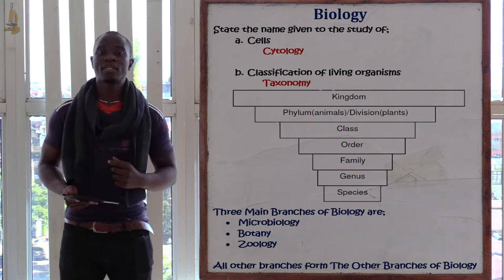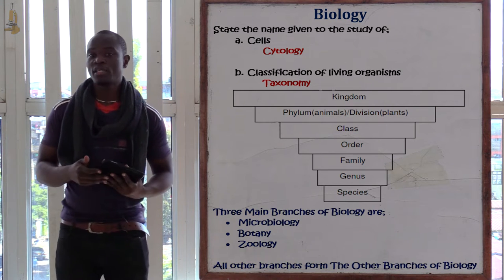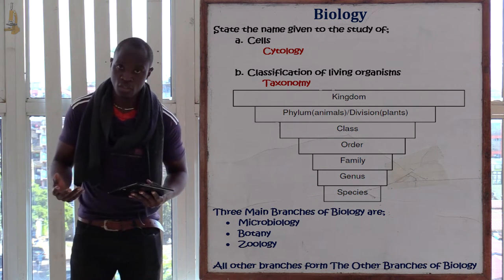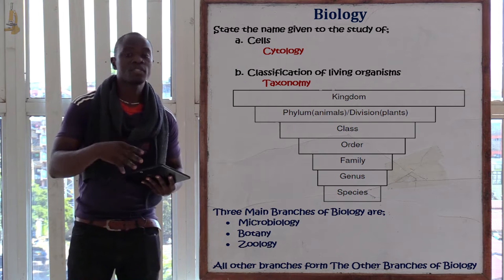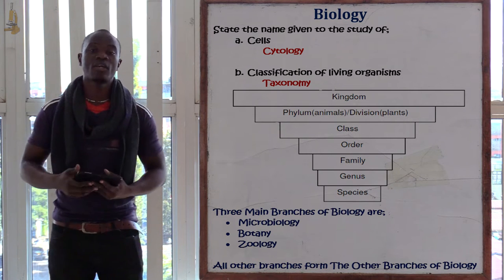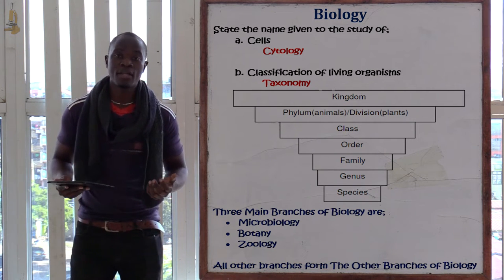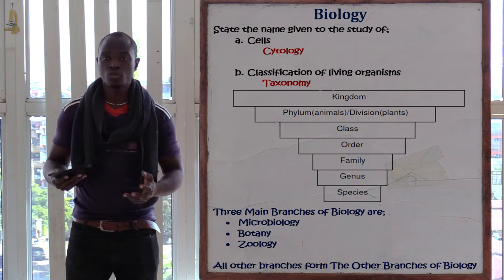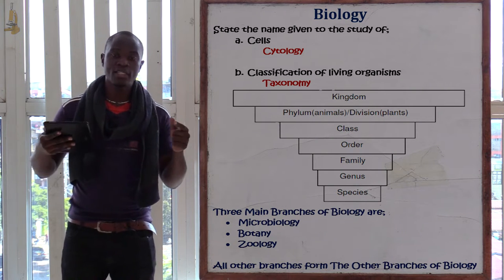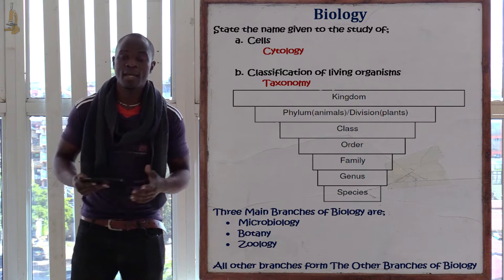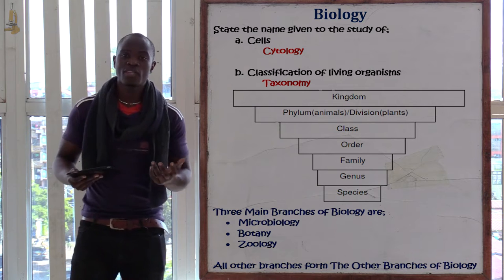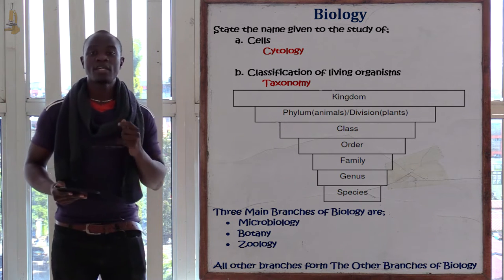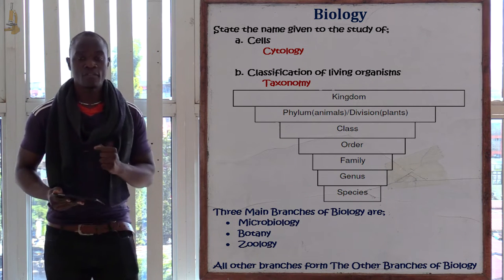If you have been asked to define the term species: species is the smallest unit of classification whereby organisms can naturally interbreed to give a fertile offspring. For example, if it's a lion, a mature lion can get another mature lion and interbreed to get a fertile offspring. That's the definition of a species.